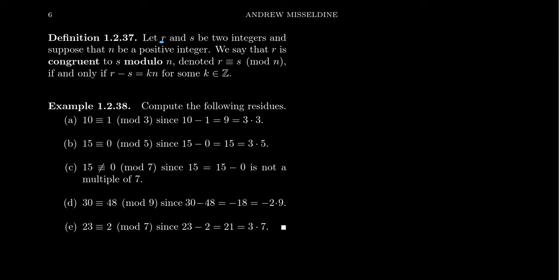So let's say we have two integers, R and S. We say that these two integers, R is congruent to S modulo N. N is some third positive integer. R and S are any integers - they could be positive, negative, or zero. N will be a positive integer. That's required. We say that R is congruent to S modulo N.